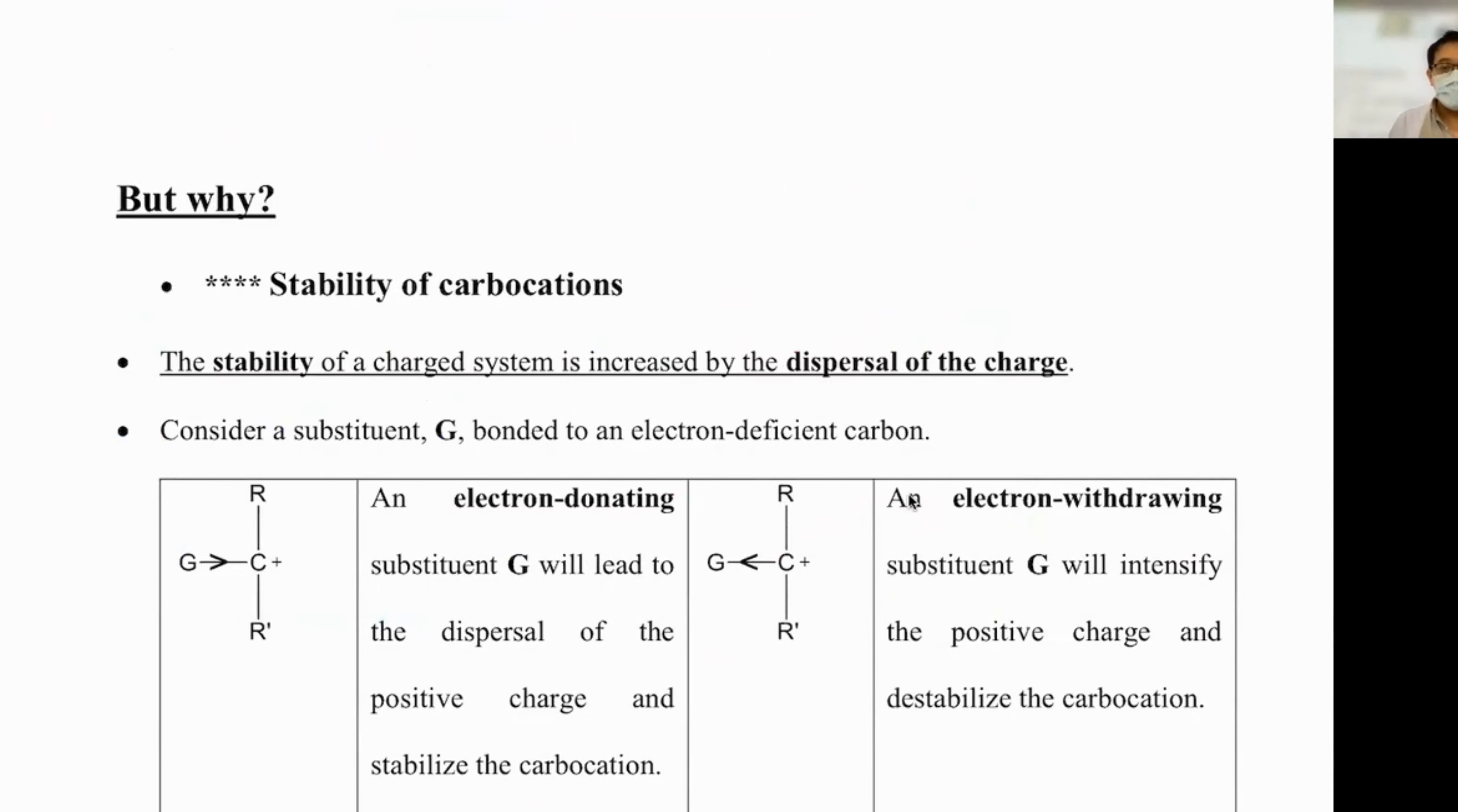The reasoning here is what we call the stability of a carbocation. Now what is the meaning of carbocation? It means the carbon that is positively charged. This is the carbocation we are talking about. Let's take a look at the fundamental here in terms of what controls the stability of carbocation. We call this the inductive effect.